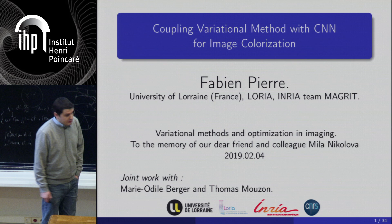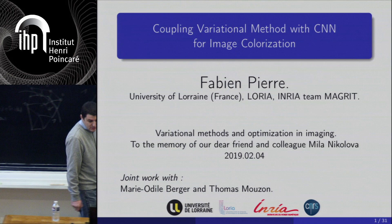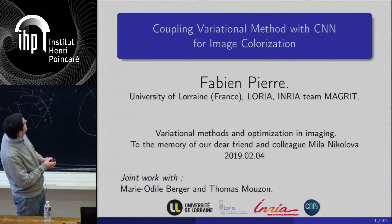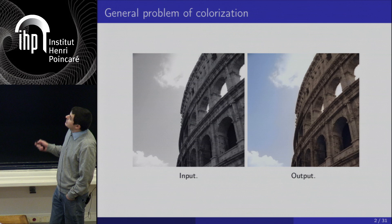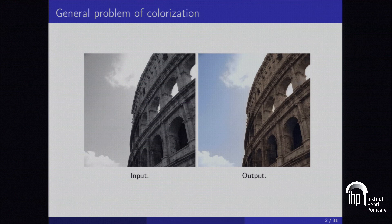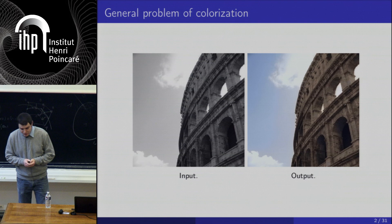I am associate professor at University of Lorraine, and I talk about coupling variational methods with CNN for image colorization. So what is colorization for the general public? Colorization consists in turning a grayscale image into a color one. It's a very hard problem because there is a big loss of information during the transformation of an RGB image into a grayscale one. But this method is very useful to make old black-and-white movies more attractive, for instance for historical documentaries.